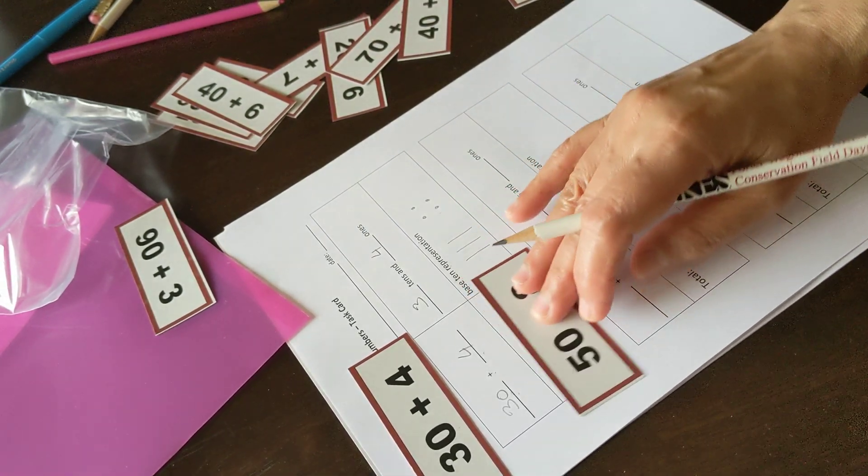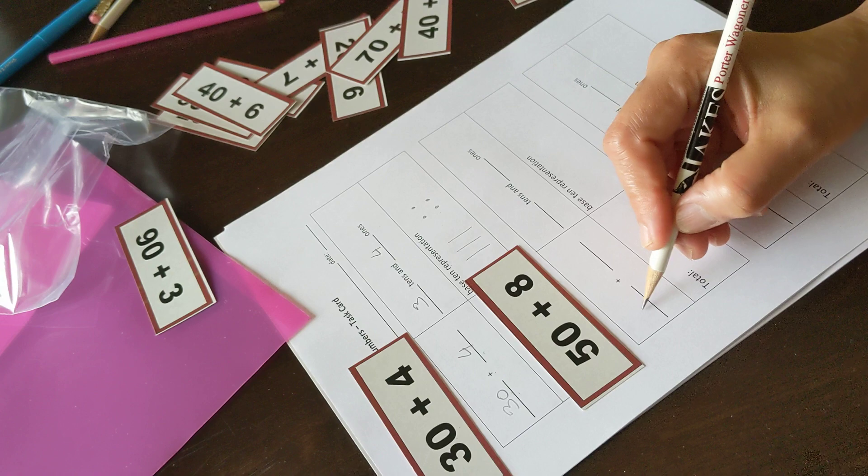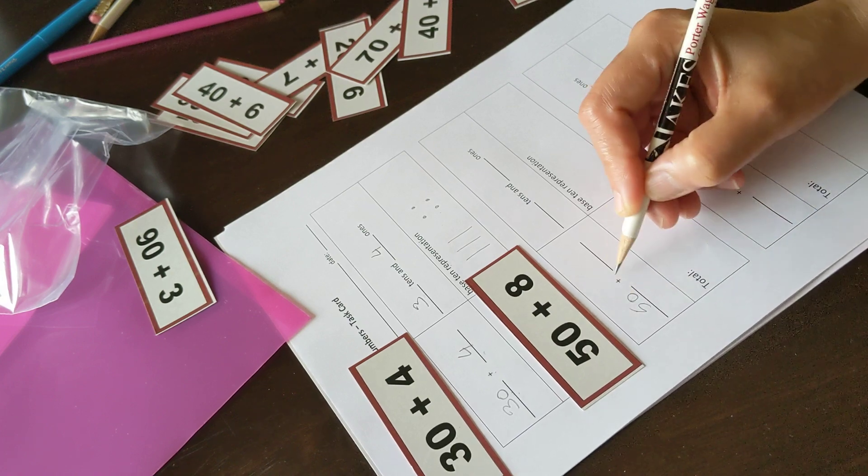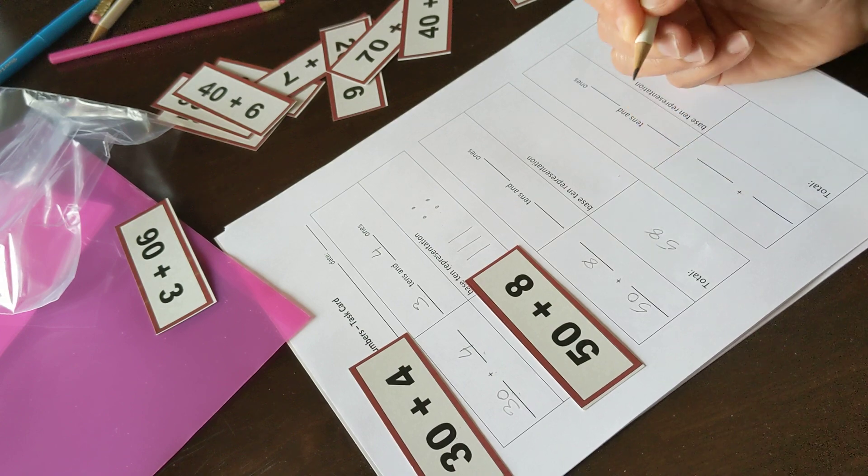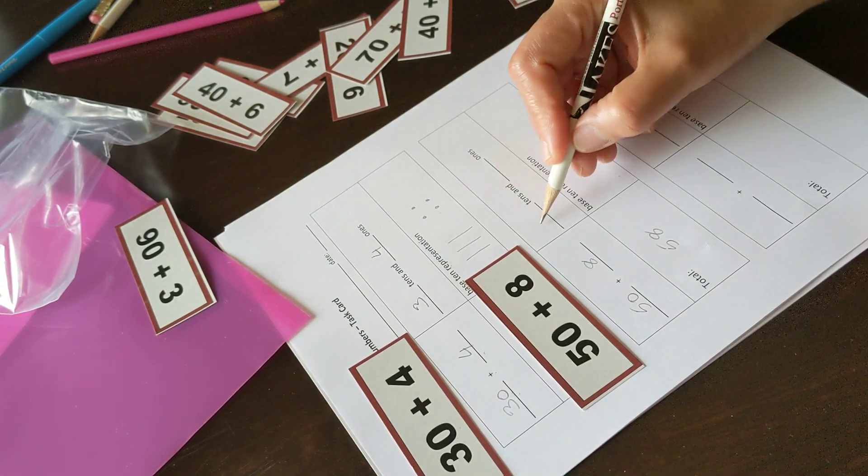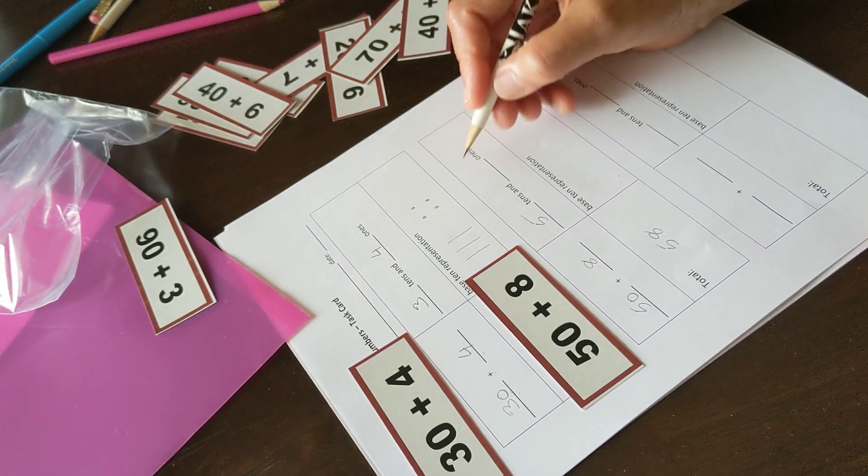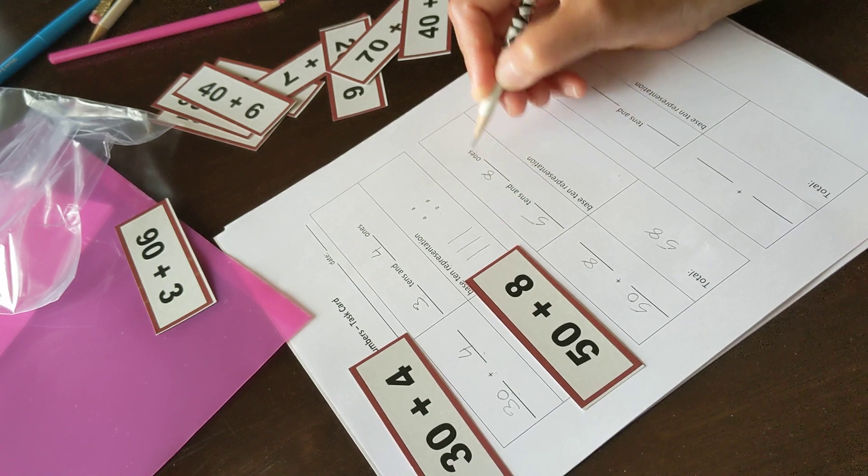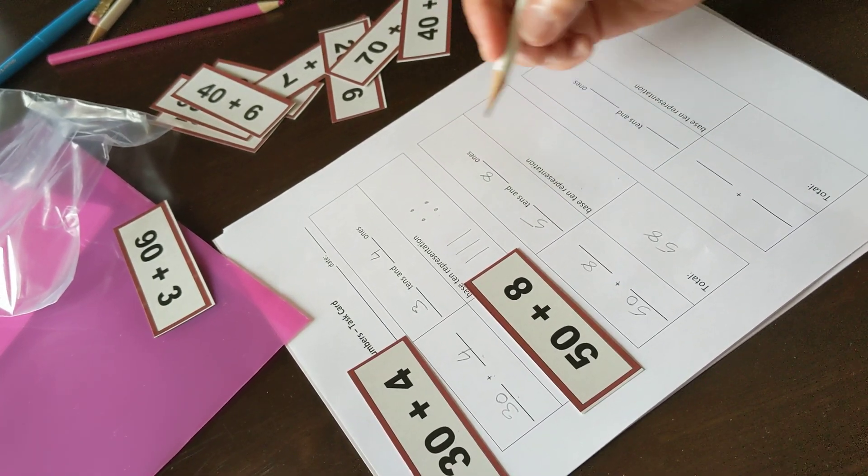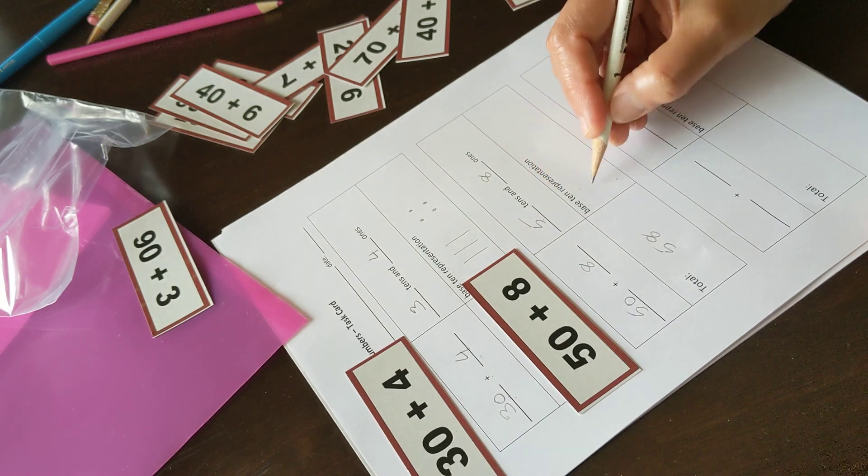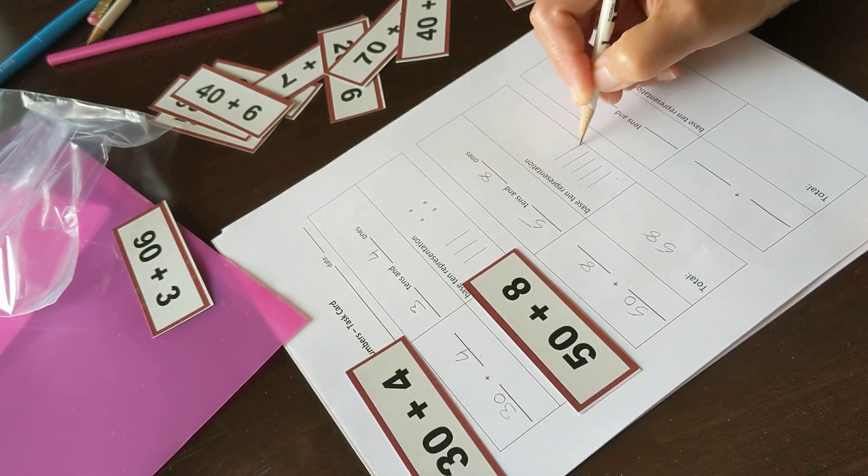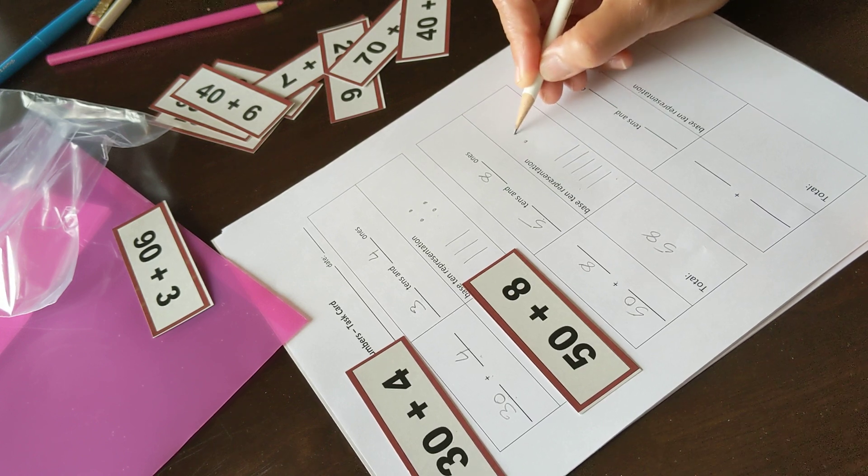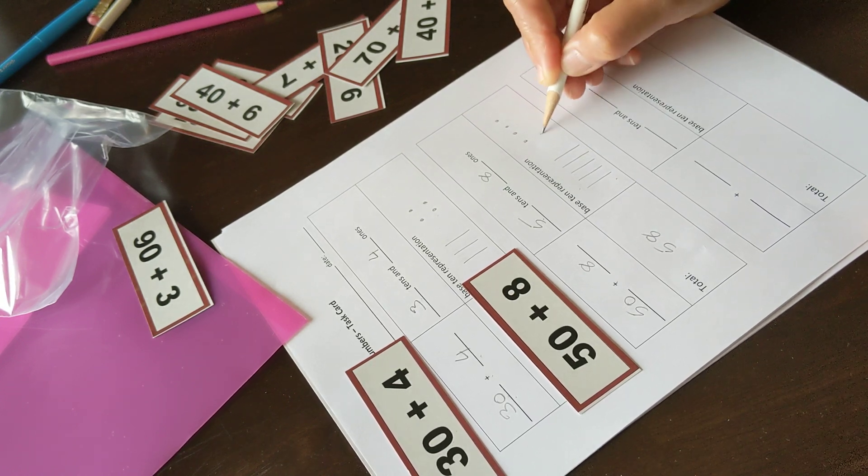Let's take another one: 58. 50 plus 8 is 58. 58 has 5 tens and 8 ones. My base 10 representation: I need 5 ten longs - 2, 3, 4, 5 ten longs - and 8 units.